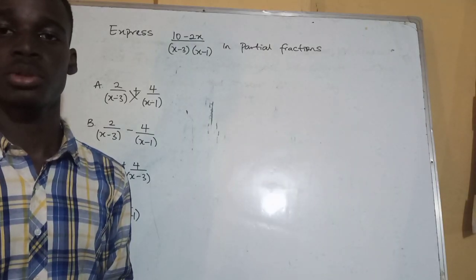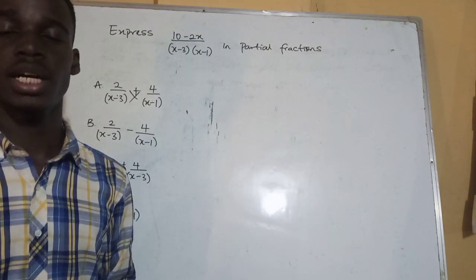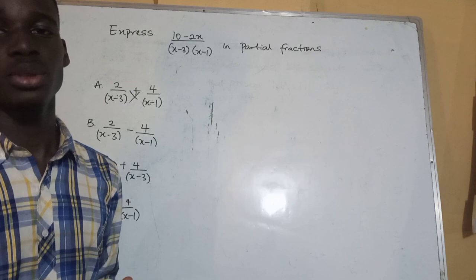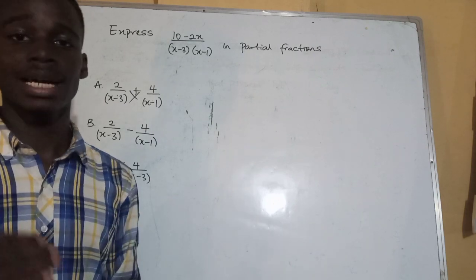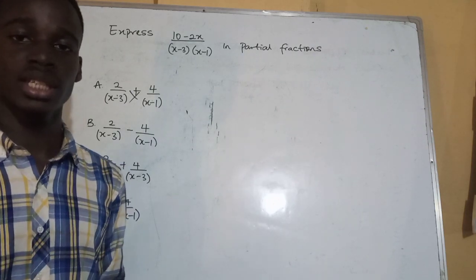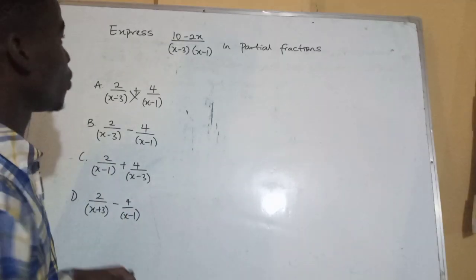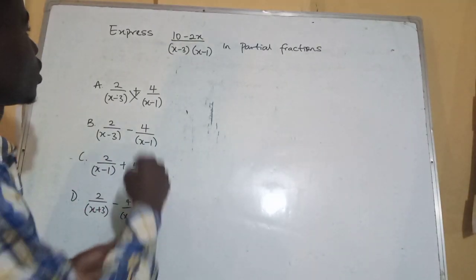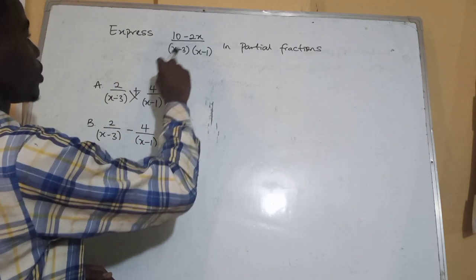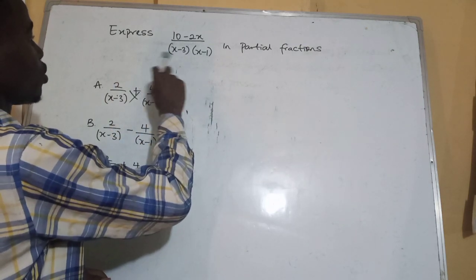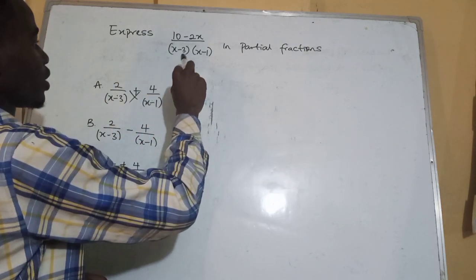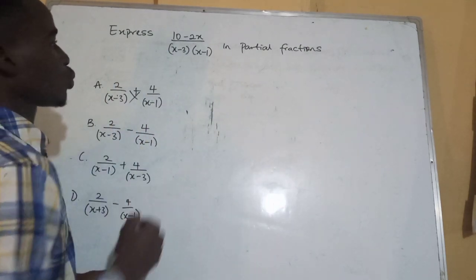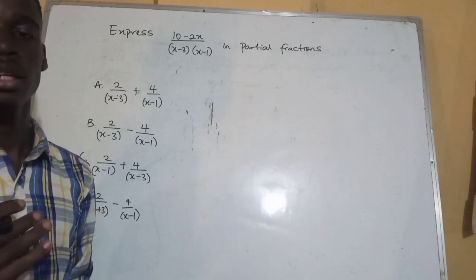Welcome to Joaquette — MLM becomes much easier. In this video, we solve lots of questions on partial fractions that came out in your test. So we have this question: express (10 minus 2x) over (x minus 3)(x minus 1) in partial fractions.